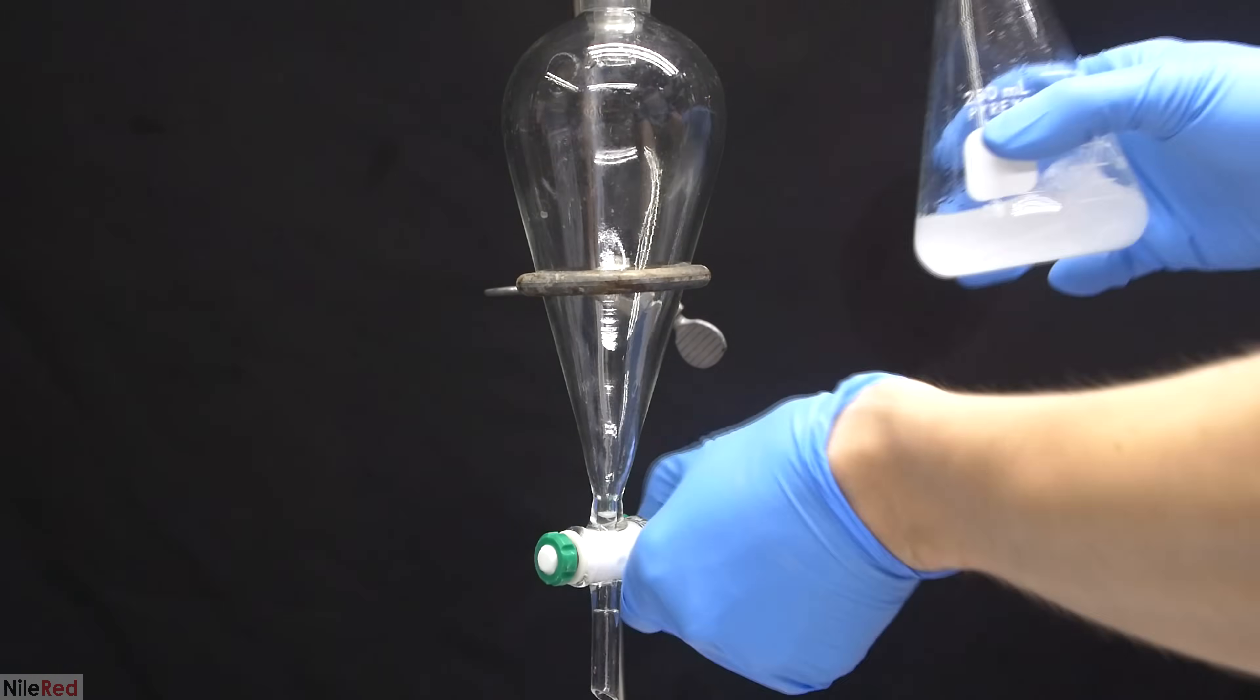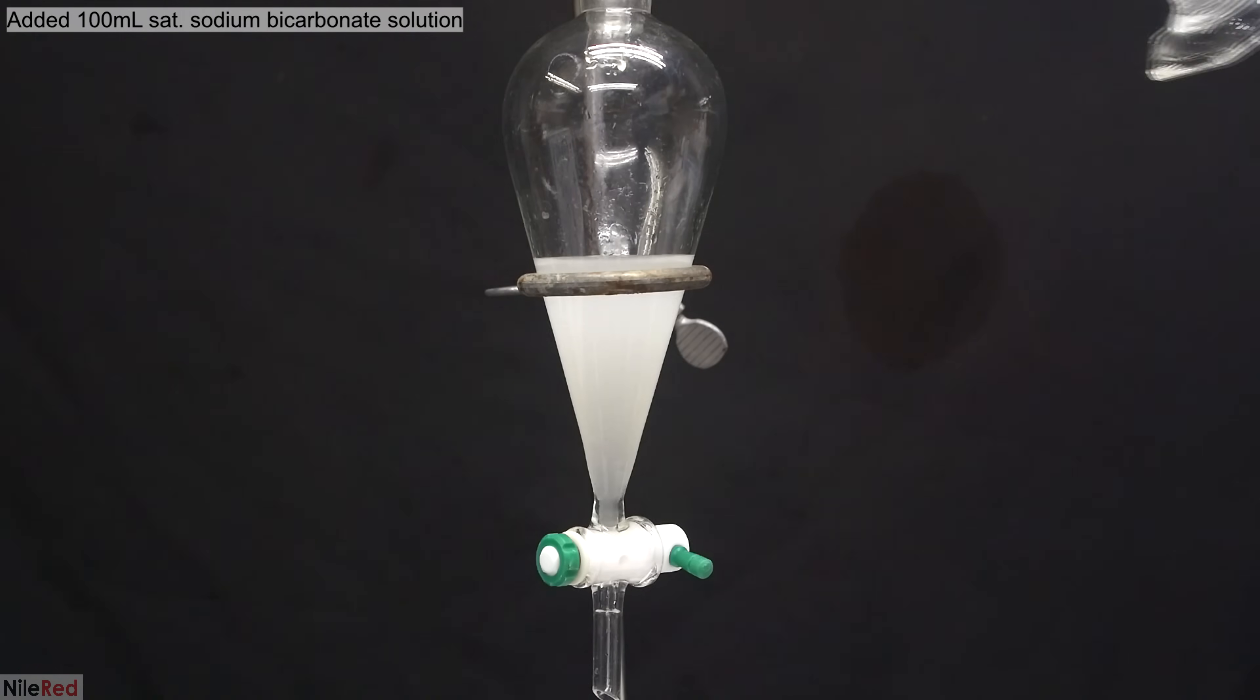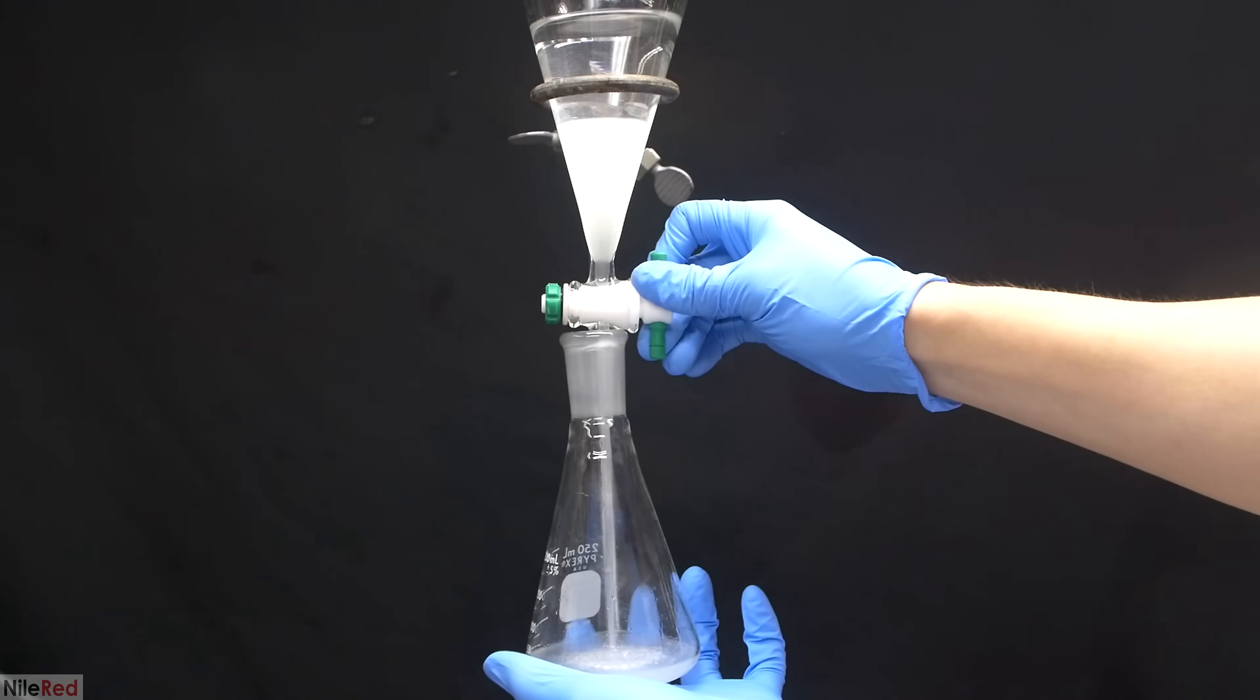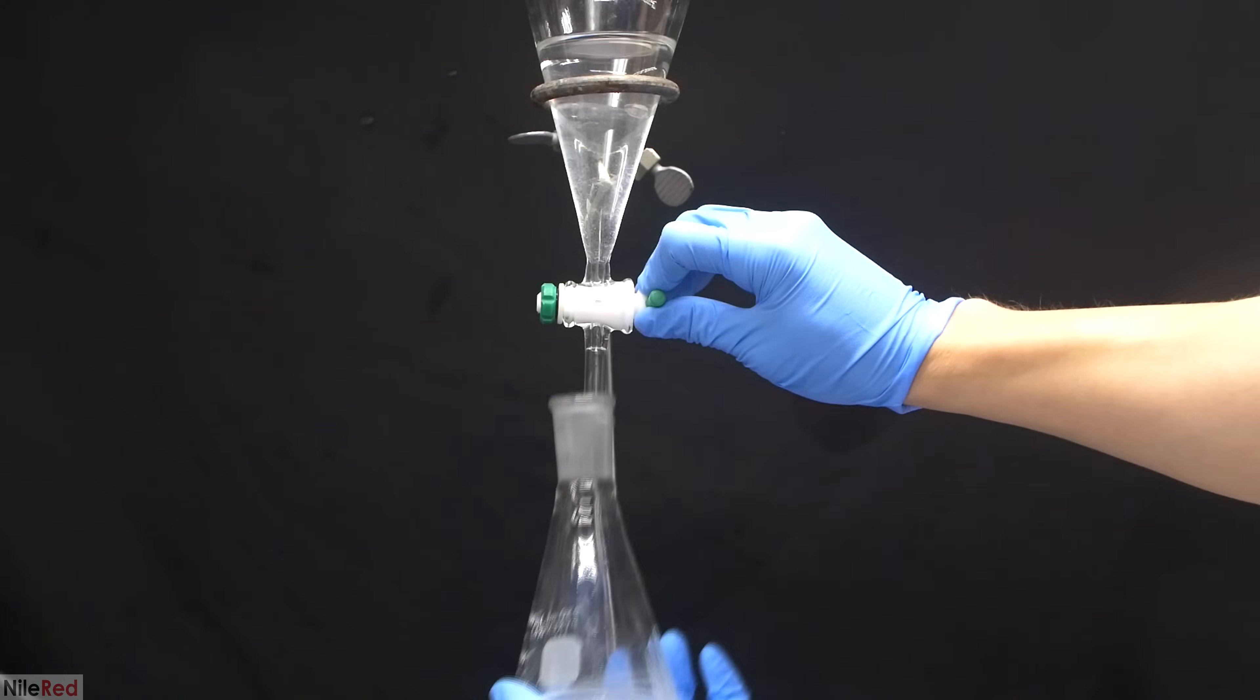The 1-bromopentane is then returned to the separatory funnel for one last washing. This final washing is to just make sure that there's no acid that might remain, and to do this, we use 100 milliliters of saturated sodium bicarbonate solution. Just like all the other washings, we mix things thoroughly, we let the layers separate, and then we drain off the lower 1-bromopentane.